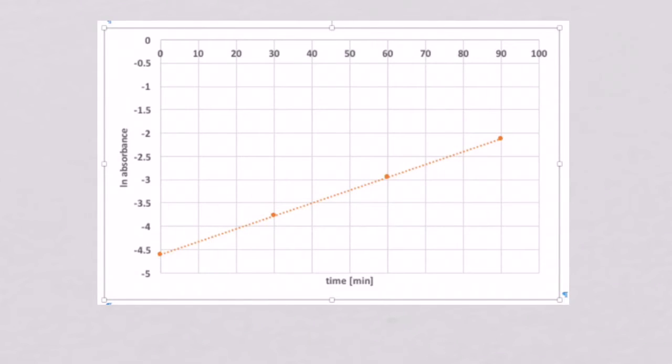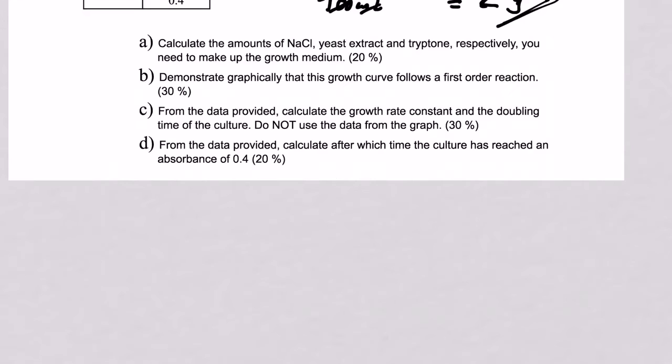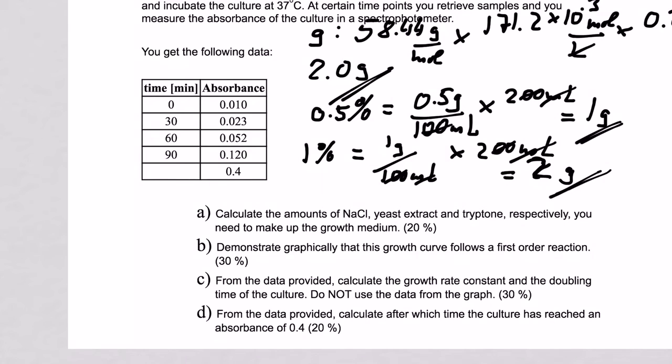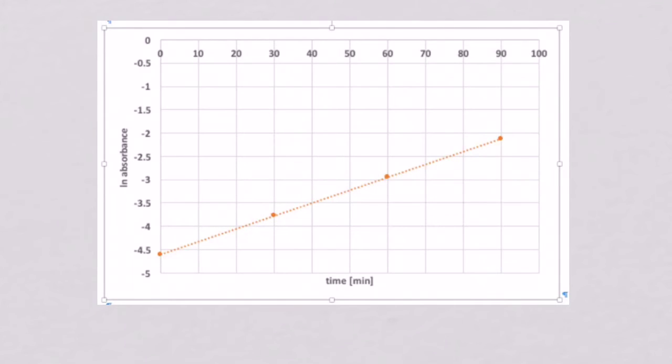Now for the next question we want to demonstrate that this follows first-order kinetics, and therefore we have to convert our data here, our absorbance. We have to take the ln of this, ln of this, and so on. That's very important. So when we do that we get the ln of absorbance. Please note there is no unit here. No unit. That's very important.